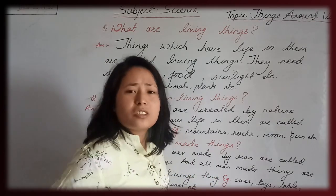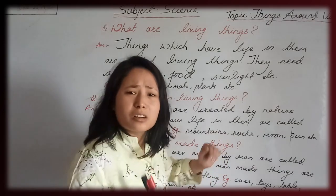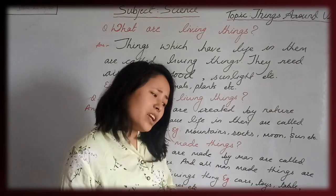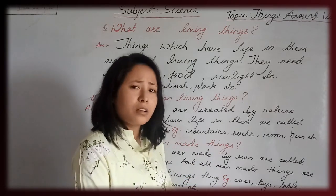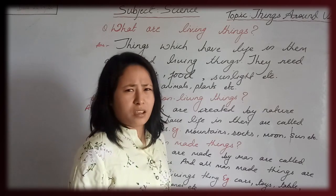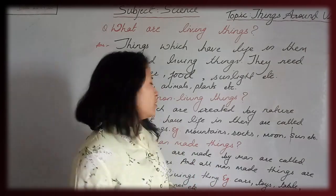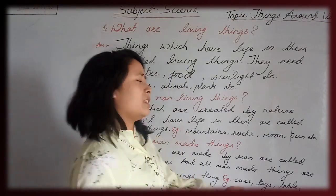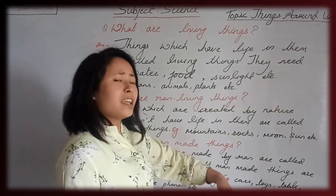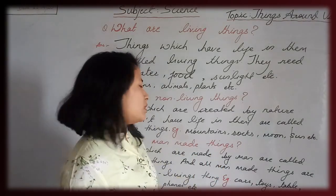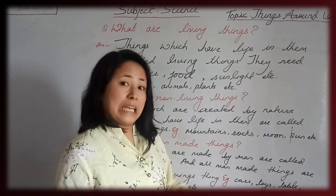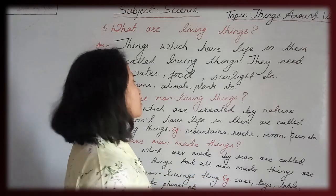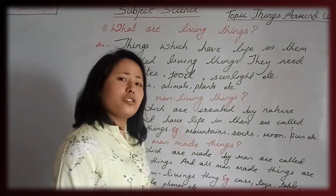Man-made things — you can breathe, eat, whatever you need to do. But if you make a robot, it doesn't need to do any of those things. So whatever a robot makes, it doesn't need food or air. Man-made things like toys, tables, mobile phones, cars — these are all non-living things.